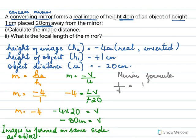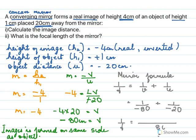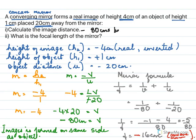Using the mirror formula to find f: 1/f = 1/v + 1/u = 1/(−80) + 1/(−20). LCM is 80: (−1 − 4)/80 = −5/80 = −1/16, so f = −16 centimeters. The negative sign confirms it is a concave mirror. Image distance = 80 centimeters, in front of the mirror.